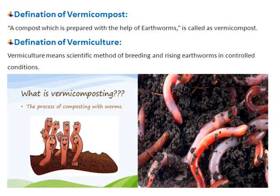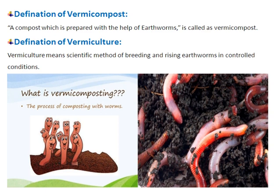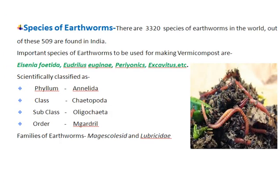A compost which is prepared with the help of earthworms is called vermicompost. Vermiculture means the scientific method of breeding and raising earthworms in controlled conditions. There are 3,320 species of earthworms in the world, out of these, 509 are found in India.